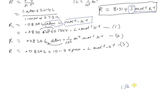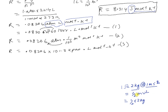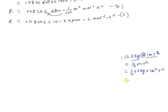One joule is the kinetic energy of a body of mass 2 kg moving at a velocity of 1 meter per second. Kinetic energy = ½ × mass × velocity² = ½ × 2 kg × (1 m/s)² = 1 kg·m²/s². So one joule equals one kg·m² per second squared.